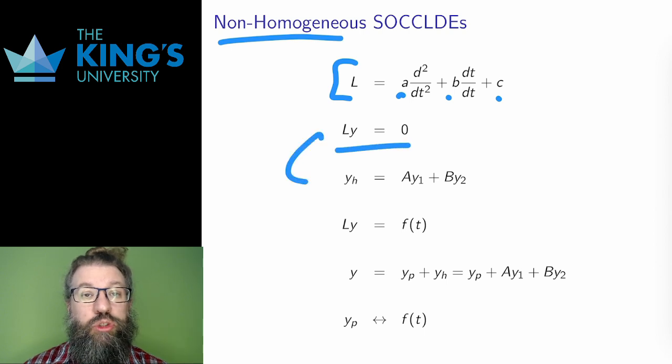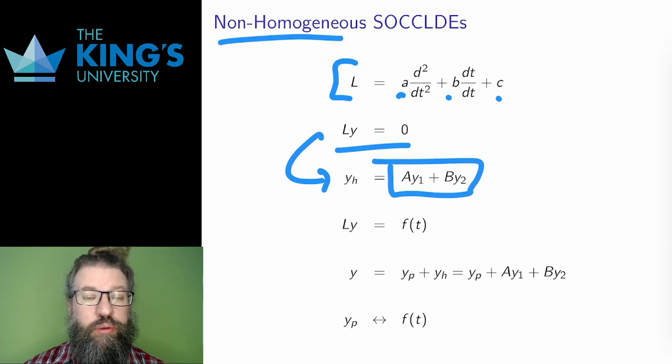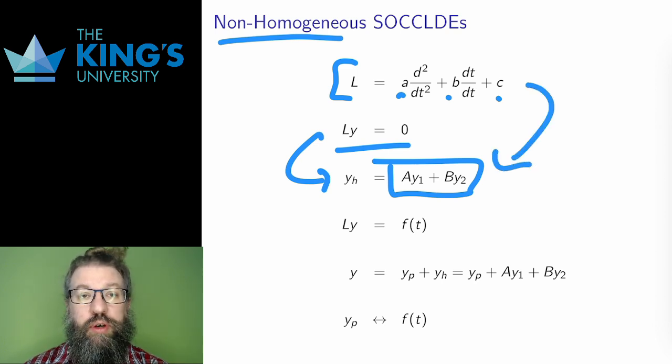It is solved by some homogeneous solution, YH, which is always the linear combination of two linearly independent solutions, Y1 and Y2. These are found with a characteristic equation and will be exponentials or exponentials combined with trig functions.